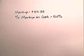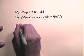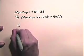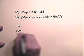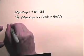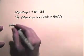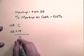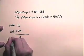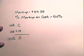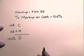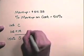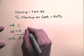In this exercise, we have the markup is $54.38. So we're going to do our basic markup formula: cost plus markup equals selling price. Cost is 100%. The markup is 50%. So the selling price is 150%. We know that the markup is $54.38.